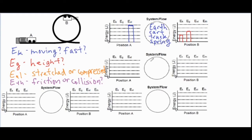For our second situation we have the same exact system — I'll shorthand it as E, C, T, and S for Earth, cart, track, and spring — but this time we are going to include friction.